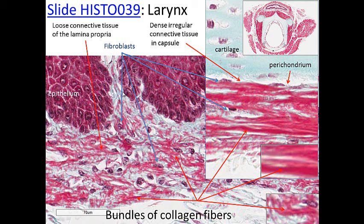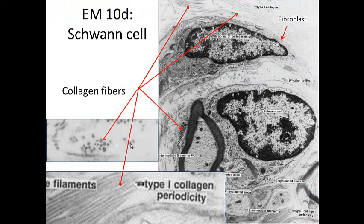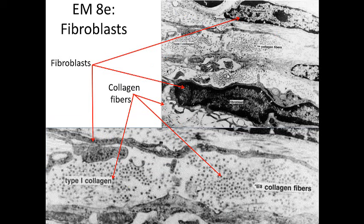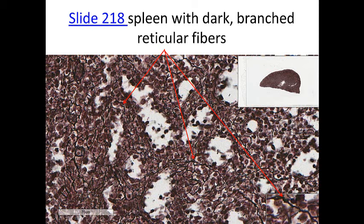On a special stain showing collagen bundles, in the lamina propria — loose connective tissue with lots of cells and not many fibers — versus the perichondrium capsule around cartilage, you can see the high density of fibers: that would be dense irregular connective tissue as opposed to loose connective tissue. At the electron microscopic level, here's a Schwann cell, a nerve, and a fibroblast as part of the perineurium. Outside are collagen fibers with their characteristic periodicity. Cross-sections of collagen fibers show varying thickness.